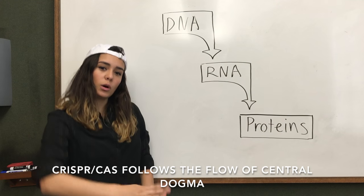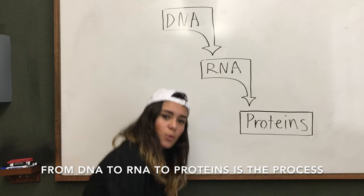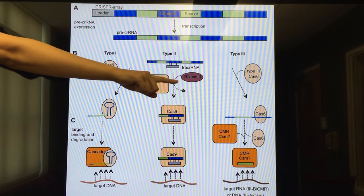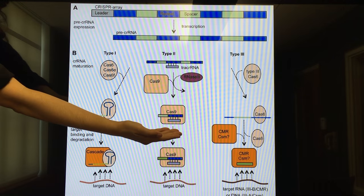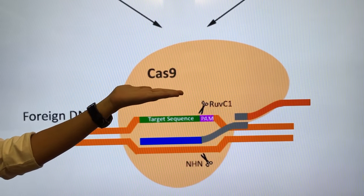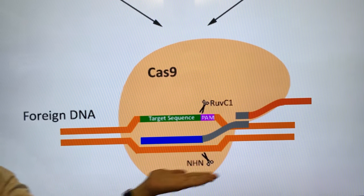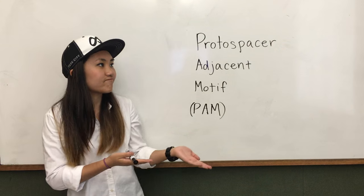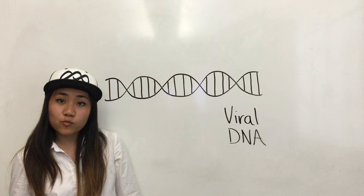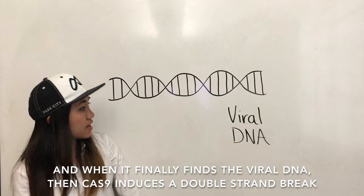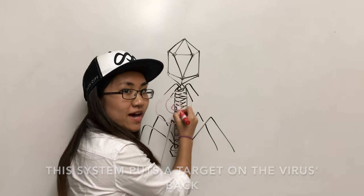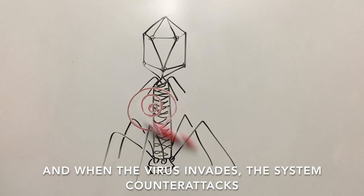CRISPR-Cas follows the flow of central dogma — from DNA to RNA to proteins. CRISPR arrays are transcribed into pre-crRNAs that mature with Cas9, tracrRNA, and crRNA. The crRNA and tracrRNA complex becomes gRNA to guide Cas9 to its target. Cas9 searches through DNA to find a strand that complements its gRNA. It binds and checks for a protospacer-adjacent motif called PAM, which only the virus has, so Cas9 doesn't cut the cell's own strands. When it finally finds the viral DNA, Cas9 induces a double-strand break.